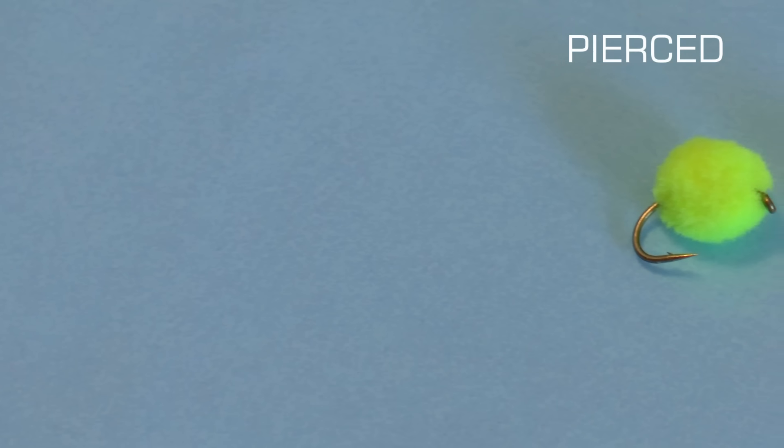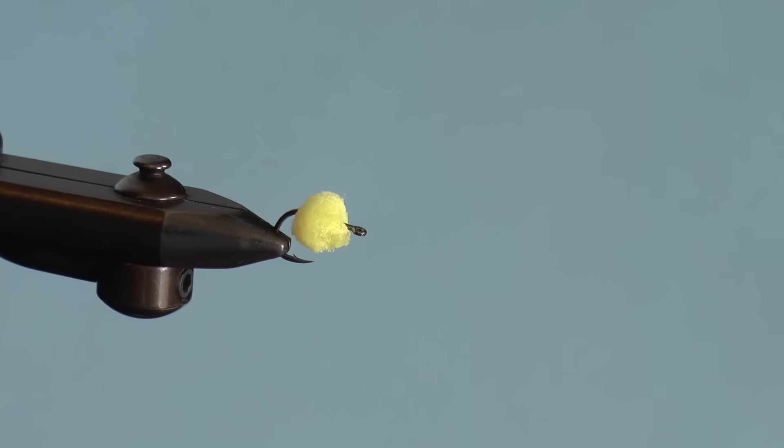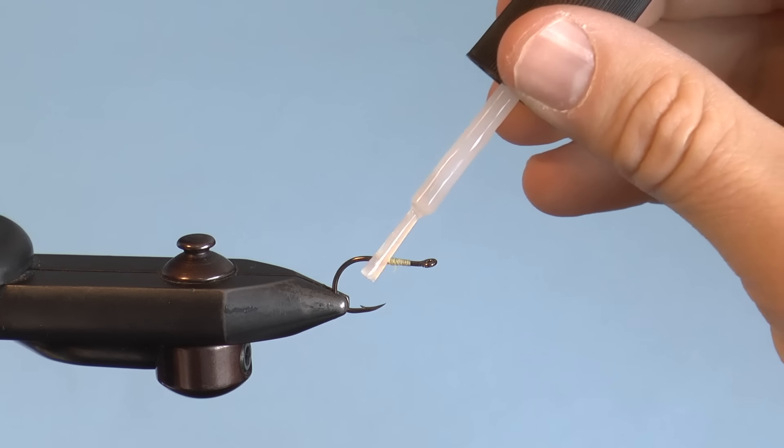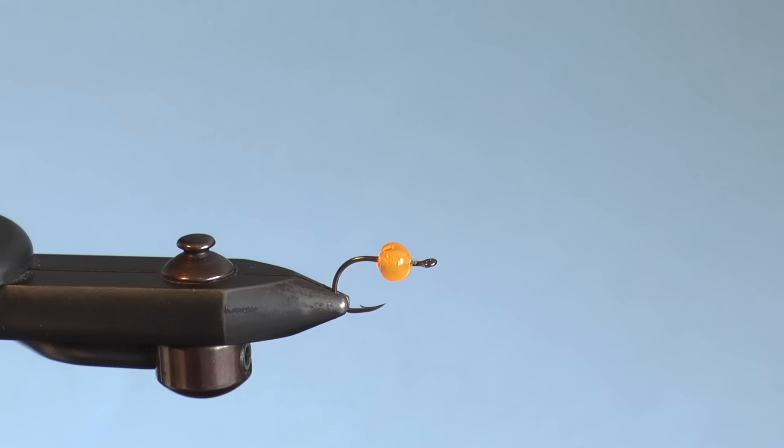Number six is the simplest fly pattern ever known to man: a pierced ball of yarn or a soft egg. Simply drive the hook point through the yarn or soft egg. Apply a little super glue to a thread base if you like. That's it. A ten-second fly.